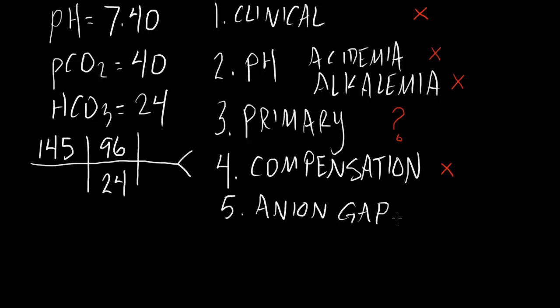So what is our anion gap? Our anion gap is 25, right? 145 minus 96 plus 24 equals 25. So by definition, we have a high anion gap metabolic acidosis, also known as a HAGMA.